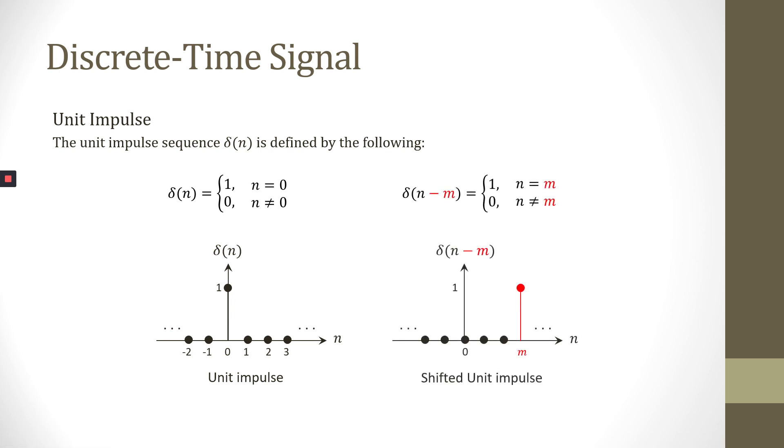Similarly, the shifted unit impulse sequence δ(n - m) is defined as amplitude 1 or has value of 1 when n is equal to m. Otherwise, when n is not equal to m, the value is 0.